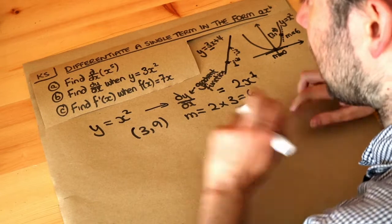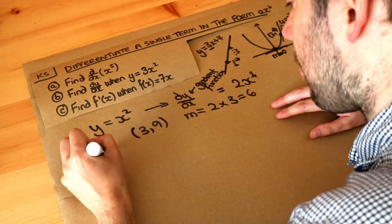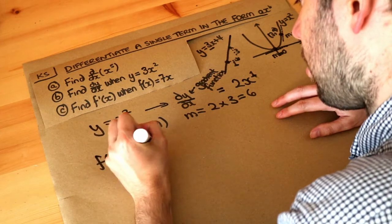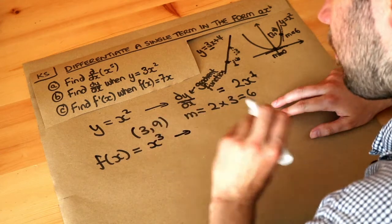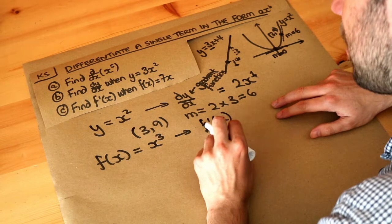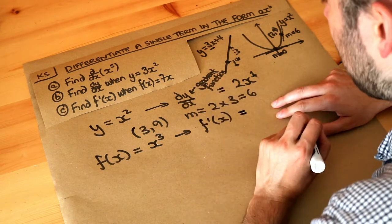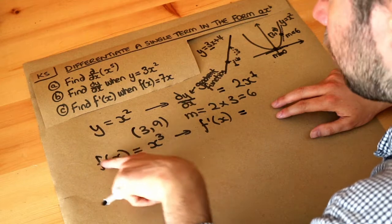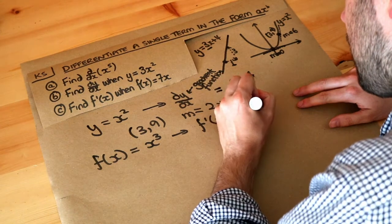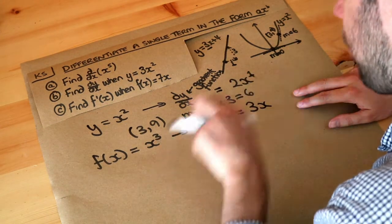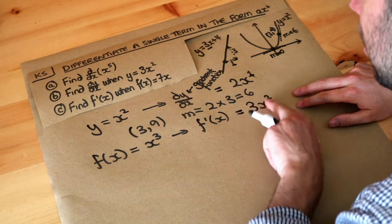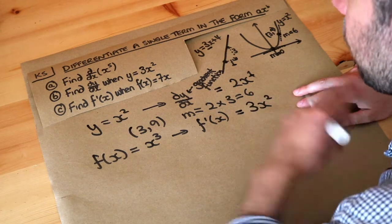Now, just to give you some other notation, if instead of Y equals, you used f of X is equal to something, say X cubed, then the gradient function we use as f prime of X. Some people say f dash of X, but it's f prime of X, and that's just a different notation for the gradient function. And we do the same. We times by the power, so we times by the 3, and then the index of 3 gets reduced by 1 to get 2.